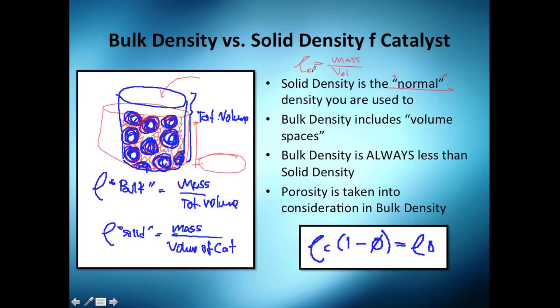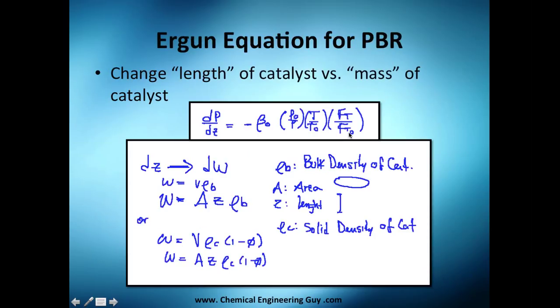So the density we're used to, the density of C or the catalyst, is the mass of the catalyst, so all these grams of catalyst divided by the actual volume that they occupy. Now we're going to use bulk density because it's easier to model it.